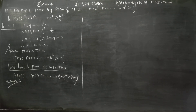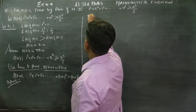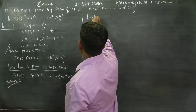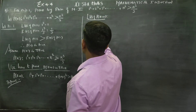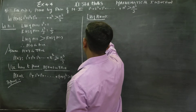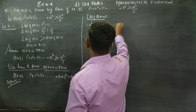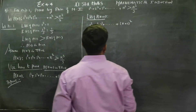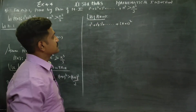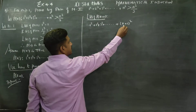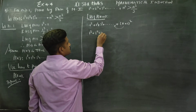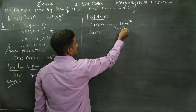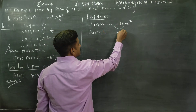Now starting with LHS of P of k plus 1. The LHS is 1 squared plus 2 squared plus 3 squared dot dot dot up to k plus 1 whole squared. We can separate the community term: 1 squared plus 2 squared plus 3 squared dot dot dot plus k squared, plus k plus 1 whole squared.